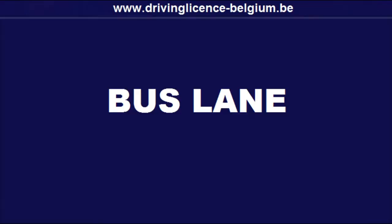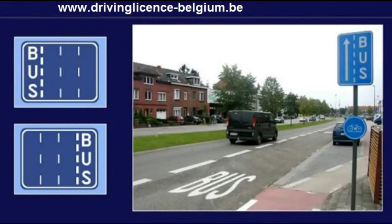Bus lane. A bus lane is a special lane indicated by a road sign. You are not allowed to drive your car or to park on a bus lane. The only exception when you are allowed to drive your car on a bus lane is the last meters before a junction, when you want to turn left or right, or in order to drive around an obstacle on the road.